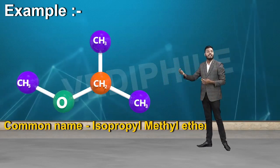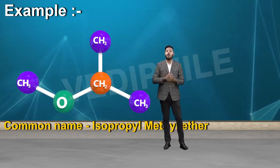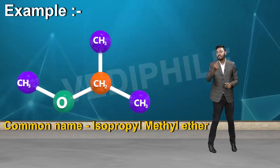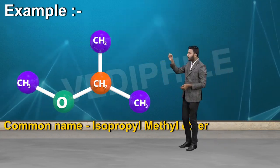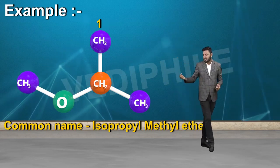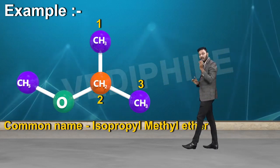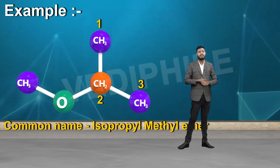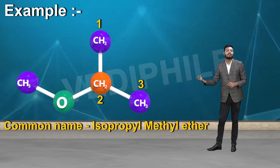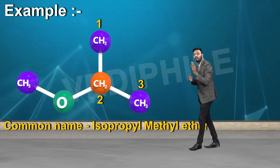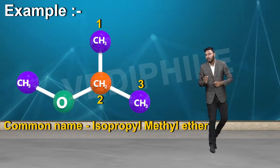For isopropyl methyl ether, we need to do the numbering carefully. We look for where the methyl group is present. The smaller part becomes the alkoxy group — so the smaller part is methoxy.